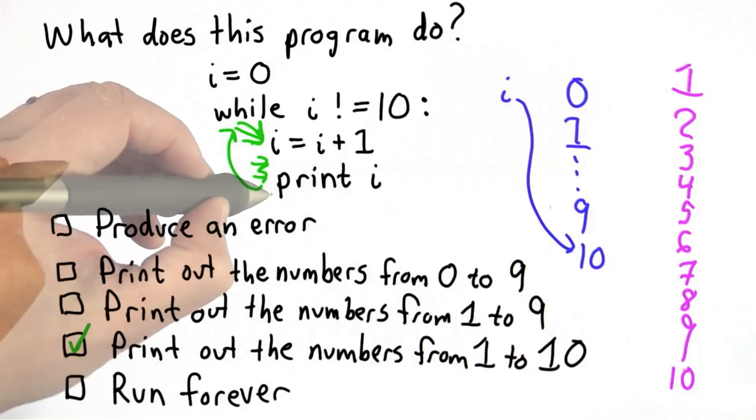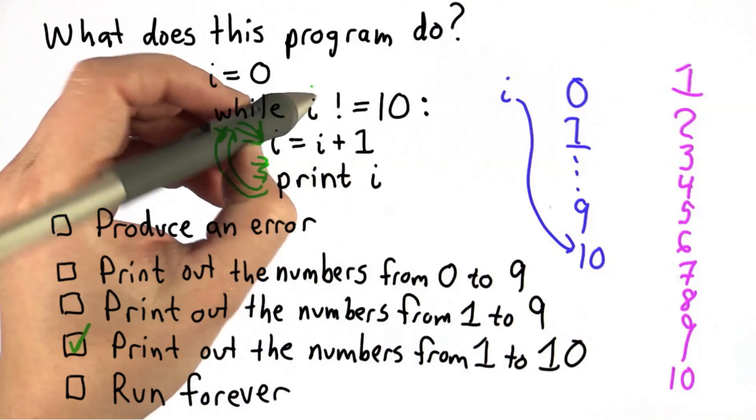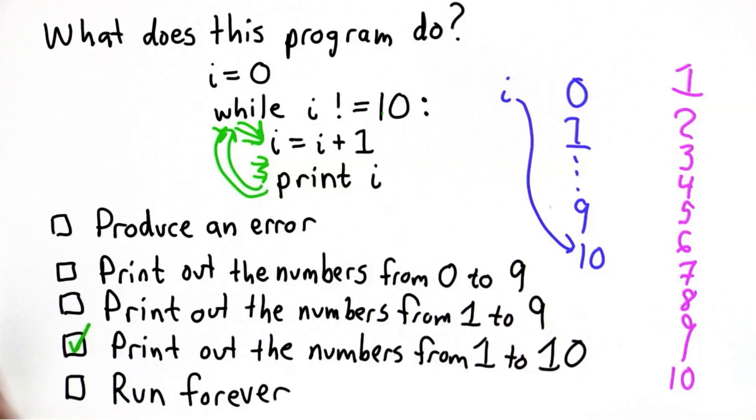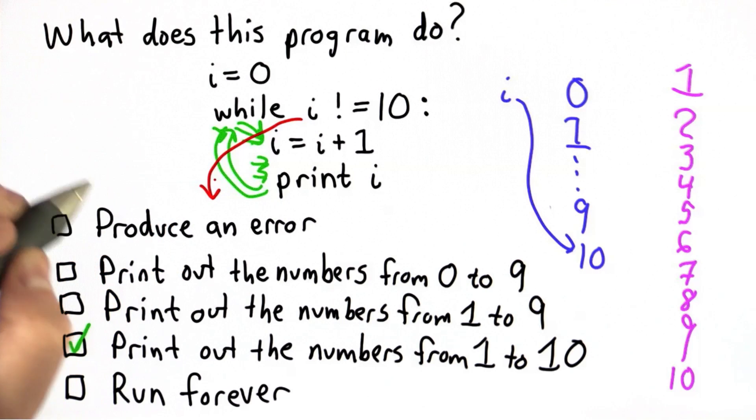Then we go back to the while test. Now the value of i is 10, so i not equal to 10. 10 not equal to 10 is false, because 10 does equal 10. That means we're done with the while loop, and we're going to continue. There's nothing to continue with, so we're done.